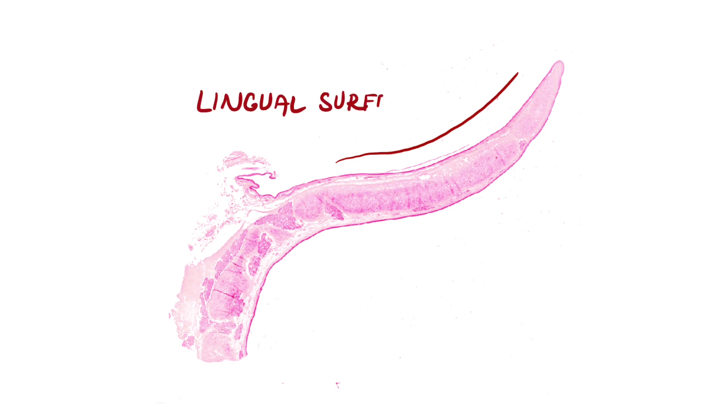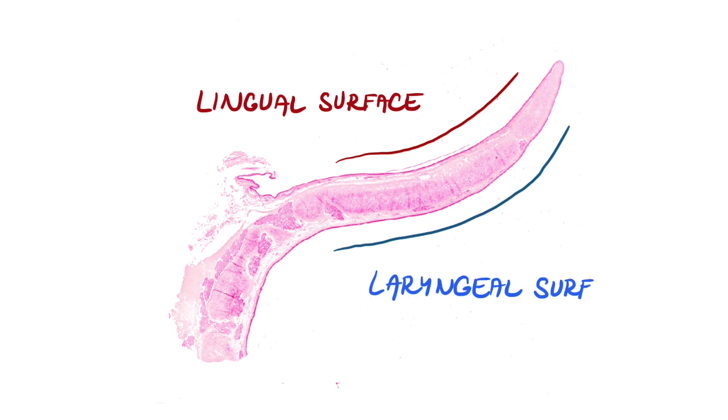This part of the epiglottis is facing the tongue, therefore we call this surface the lingual surface. The surface on the opposite side is called the laryngeal surface.